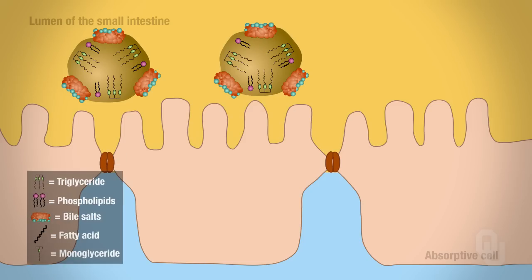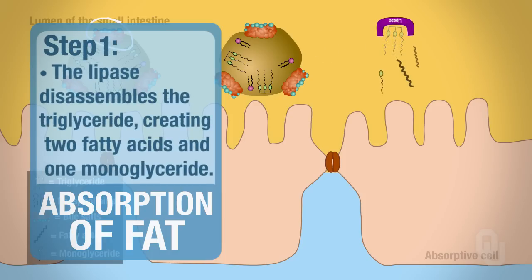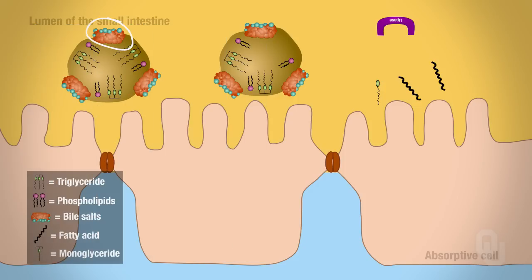Now let's look at how lipase acts and how it breaks down a fat droplet. Assuming the bile salts are already bound to the fat droplet, lipase comes in and binds to the fat. Lipase interacts with one triglyceride at a time. When we break down a triglyceride using lipase, we get monoglycerides and fatty acids. They are no longer coupled together.